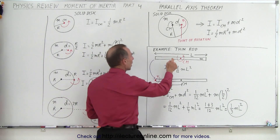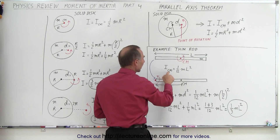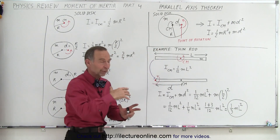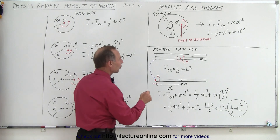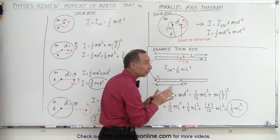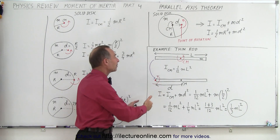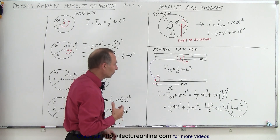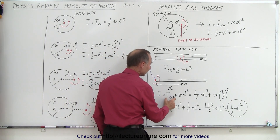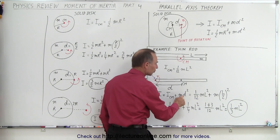Let's show some examples. Let's say we have a thin rod and we know that it rotates about its center of mass. The moment of inertia about the center of mass is one twelfth ml squared — we already know that from our previous videos. So what happens when we move that point to a different point, let's say at the very end? We already know what the moment of inertia is, but let's see if we get that equation when we apply the parallel axis theorem. The total moment of inertia is the moment of inertia at the center of mass, which is one twelfth ml squared, plus m times the distance we moved squared.